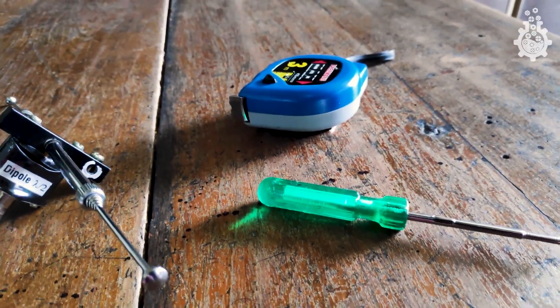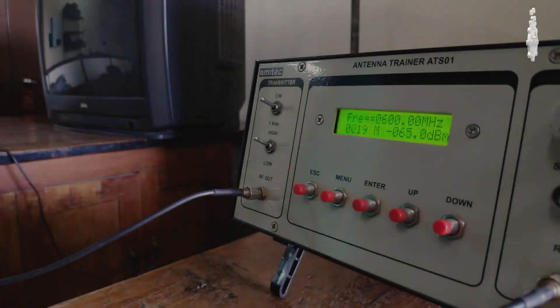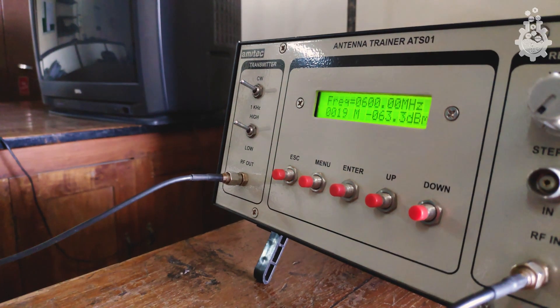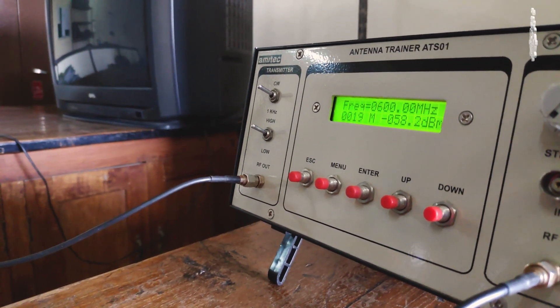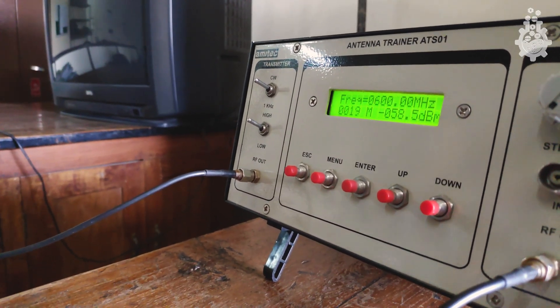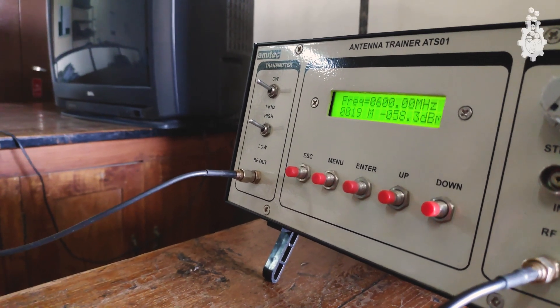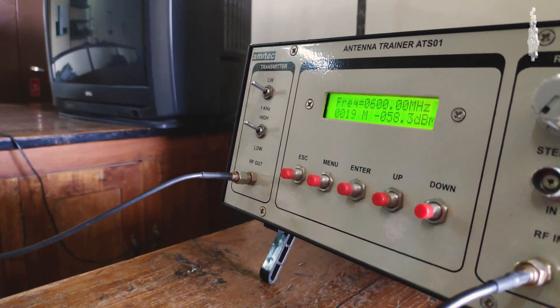a screwdriver, and a measuring tape. Now let's get an overview of this experiment before we start. We will send a test signal using the antenna trainer kit, which will be received and indicated in the form of decibel milliwatts or dBm,